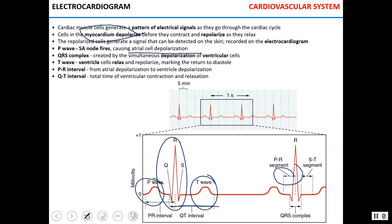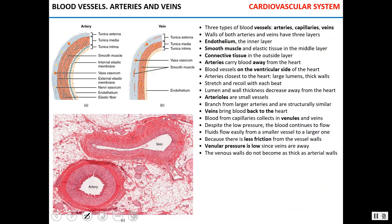There are several EKG abnormalities worth mentioning. If there is no P-wave on the EKG, it means the sinoatrial node doesn't work and atria do not contract. If the P-wave is present but the QRS complex, ST segment, and T-wave are absent, it means the AV node did not let the electrical signal through to the ventricles, so ventricles do not contract — this is also called a dropped beat.